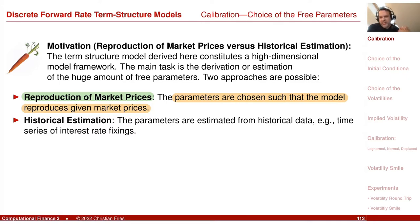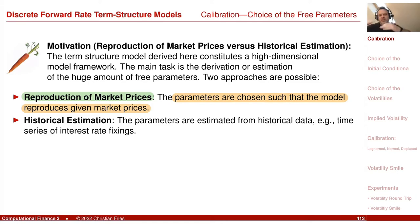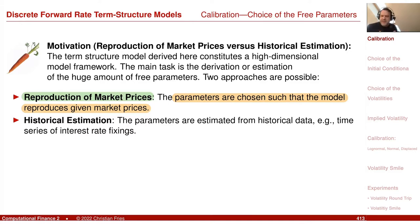Recall we had the Black model, which is very similar to one special case of our term structure model — the Black model for a caplet. So we can calibrate the model to an observation of a caplet. Alternatively, for volatility, you can observe how strong the movement was in the past — go to the time series of forward rates and estimate the standard deviation of changes. If it is a log-normal model, it's the log changes. This gives a historical estimation.